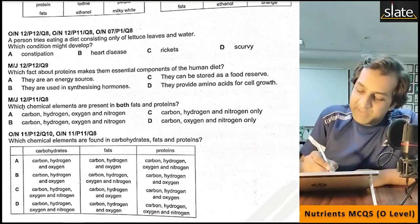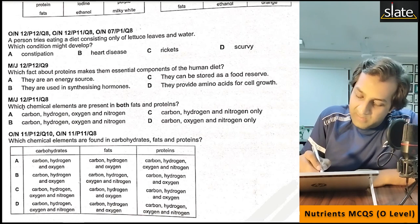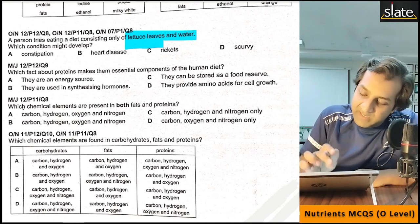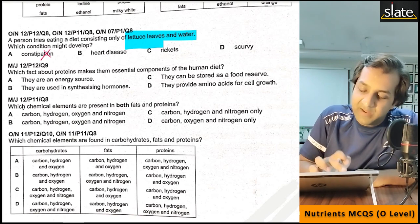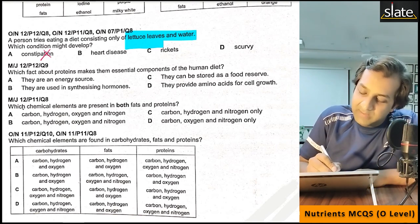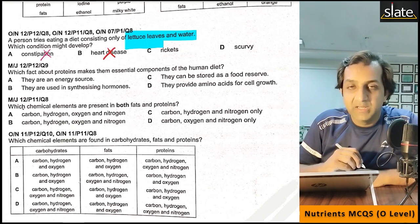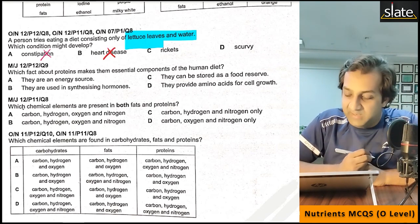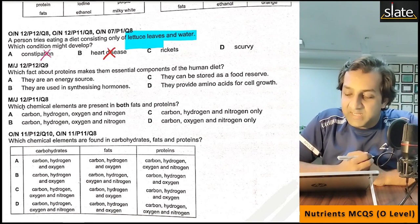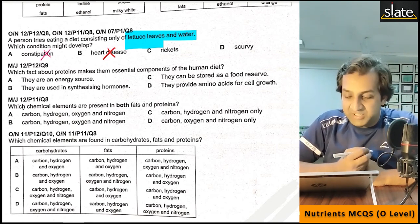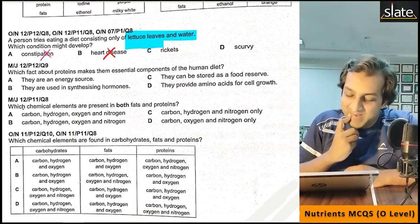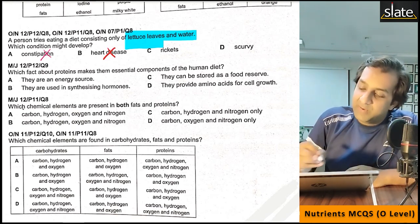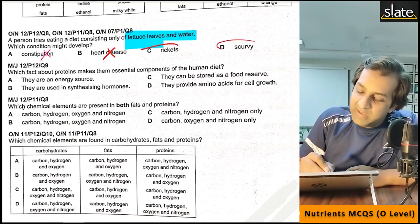If someone eats only lettuce leaves and water, what deficiency can develop? Not constipation, because lettuce has fiber. Not heart disease, because lettuce is not fatty. Rickets comes from calcium deficiency, and vitamin C deficiency comes from lack of green leaves — so rickets is a possibility due to insufficient vitamin C from this diet.